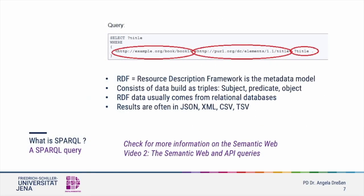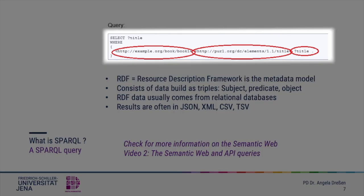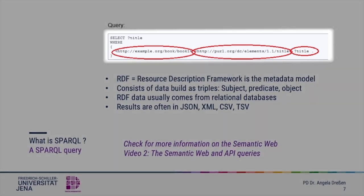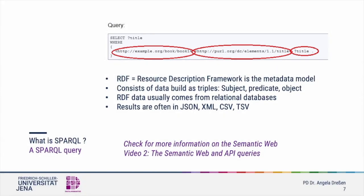A SPARQL query looks like this. Data is described through RDF as the respective metadata model. For the query, this data is put into triples of subject, predicate and object — here you may get an idea of what this relates to semantics. When you have built your triples and query the SPARQL endpoint, the results will probably be in one of these formats: JSON, XML or TSV.